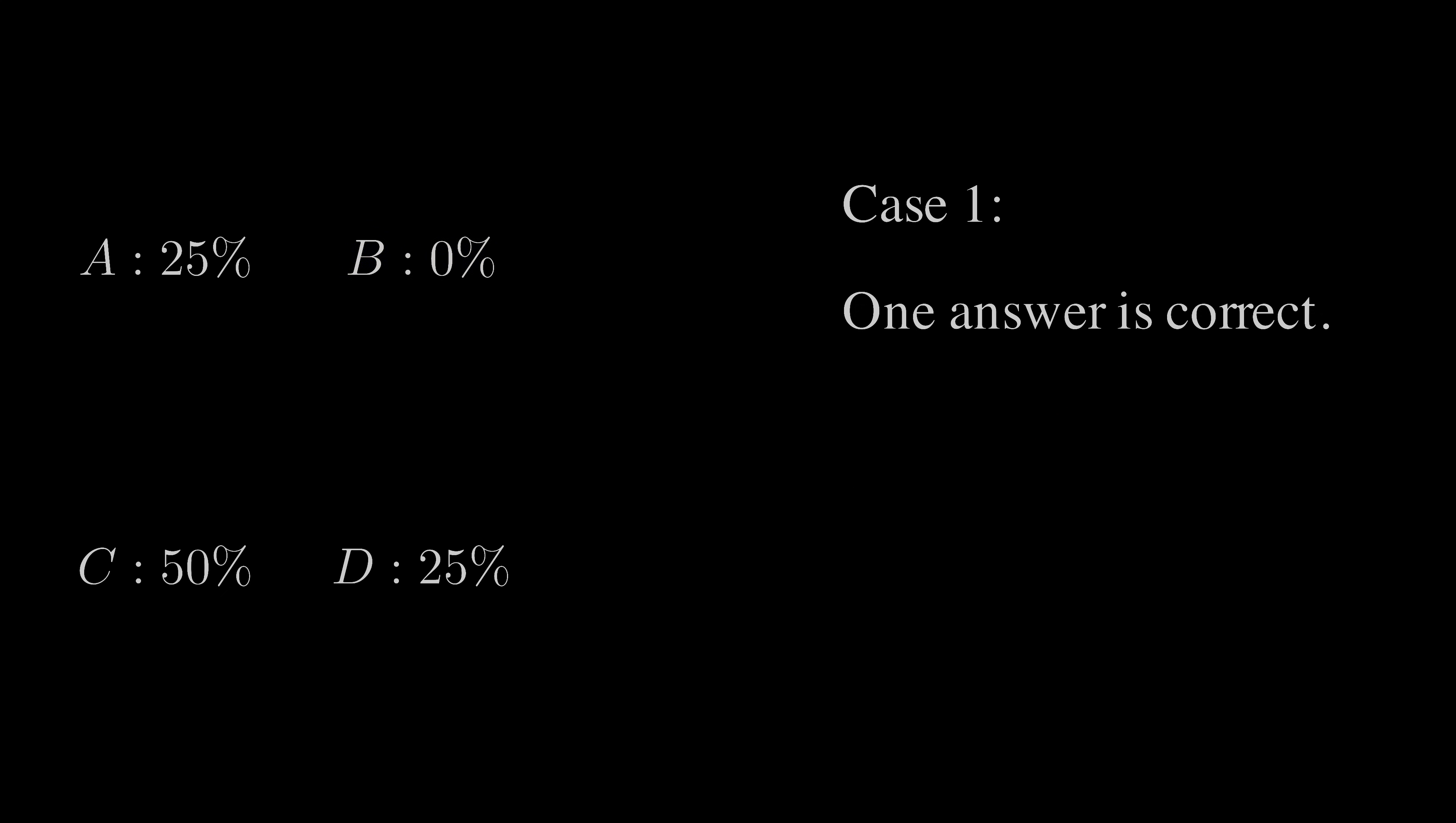How about we consider A and D and say C is correct? But if C is correct, then the chance you randomly pick C, the correct answer, is 25%. But C says it's 50%. So it's a self-contradiction too.